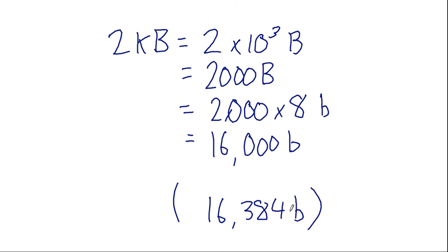So again, if we are approximating the prefix of the decimal, 10 to the power of 3, or the binary, 2 to the power of 10, it makes very little difference. But if you want to be precise, make sure you know what prefix is being used.